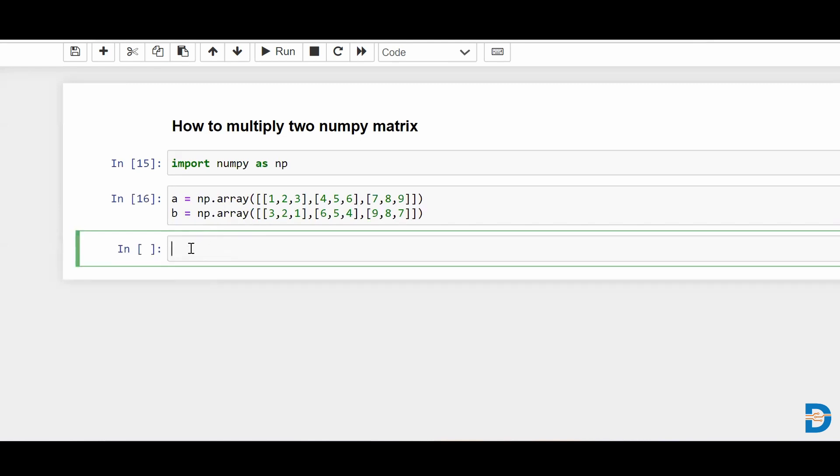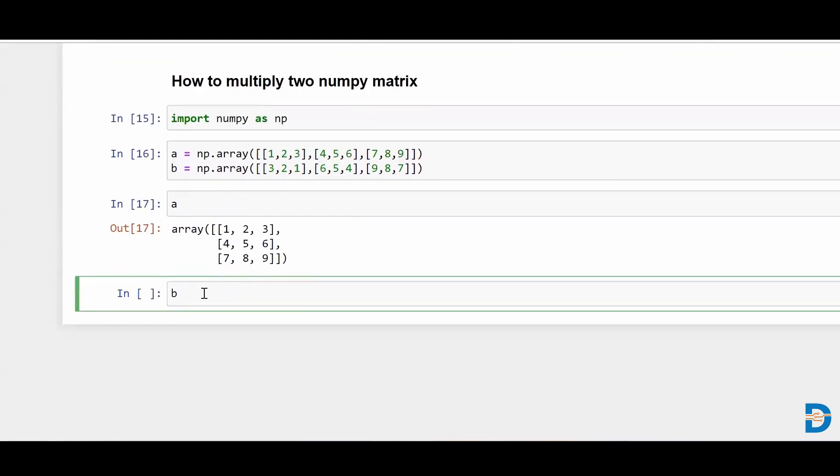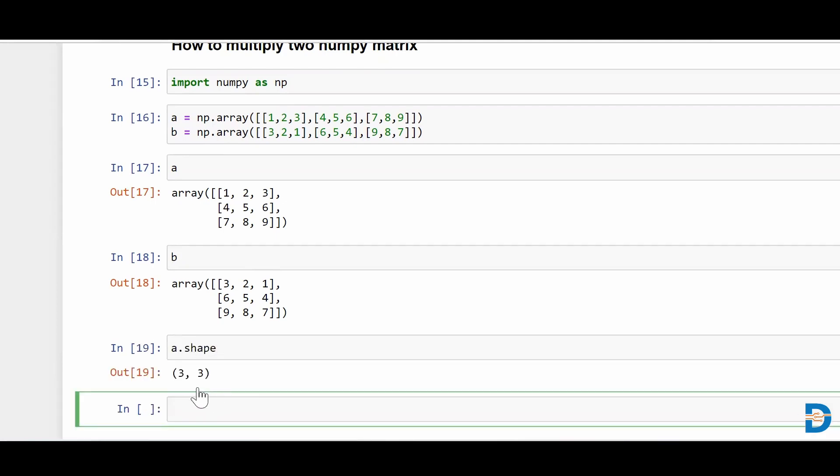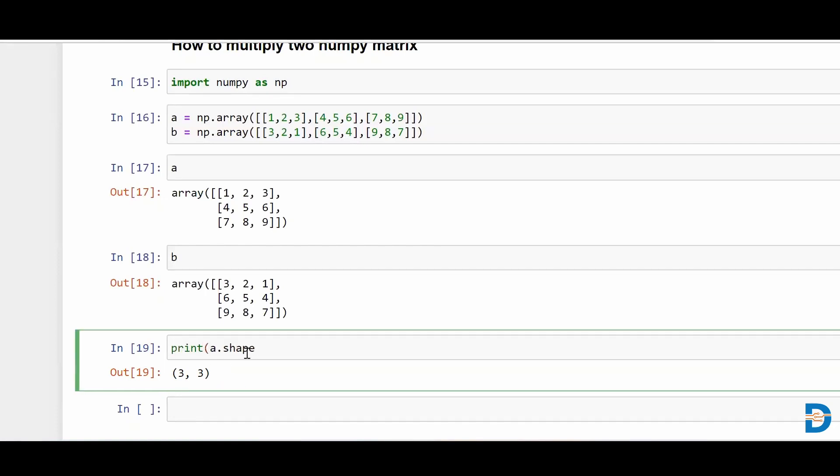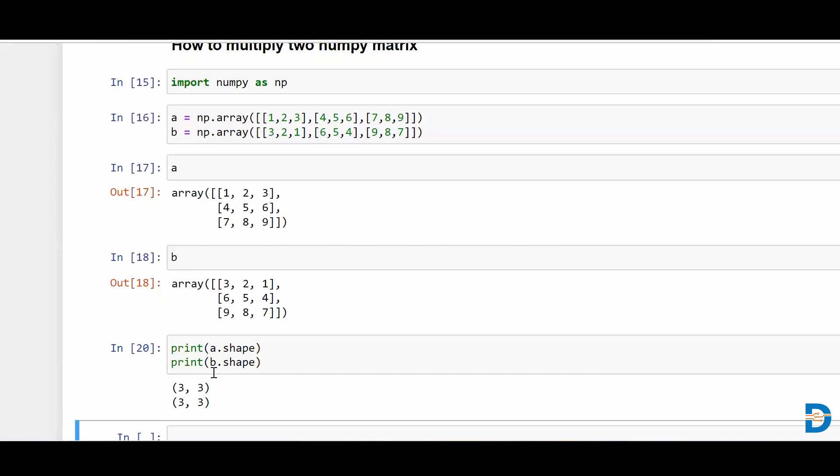So I just created two NumPy matrices. We can execute the cell A and B just to see how it looks like. Simply we could see that this NumPy array is created and we can simply say a.shape and it will tell me what is the shape of this particular matrix. So clearly it's a three by three matrix A. Let me do it in one cell itself. So I'll say print b.shape as well. So we have three by three matrices for both A and B.